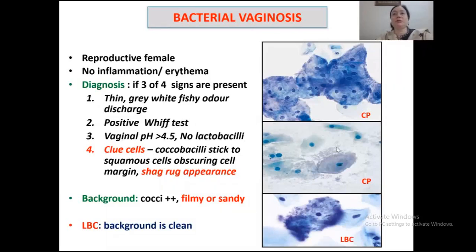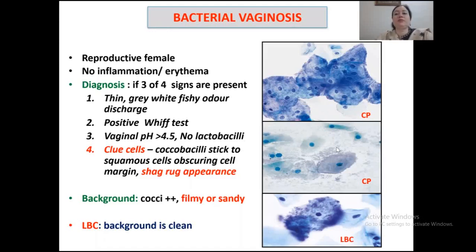The next infection is bacterial vaginosis, the most common cause of abnormal vaginal discharge in childbearing age, associated with PID, preterm birth, and post-operative gynecological infection. It represents a shift in vaginal flora from lactobacilli to a polymicrobial syndrome involving many obligate and facultative anaerobic bacteria, most commonly Gardnerella vaginalis, Peptostreptococcus, Bacteroides, and Mobiluncus. Clinical diagnosis is made if three out of four signs are present: thin gray-white vaginal discharge with fishy or ammonia-like odor, and positive whiff test when 10% KOH is added.